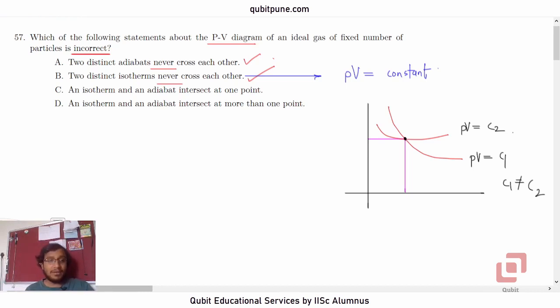Now, what is the equation of adiabatic process? It is PV raised to gamma equal to constant. Where gamma is greater than 1, the ratio of specific heats, Cp by Cv. So, we can now draw a picture showing one isotherm and one adiabate intersecting once. And using these equations, we can argue why they can never intersect multiple times.